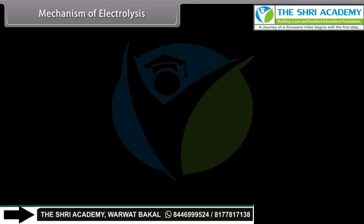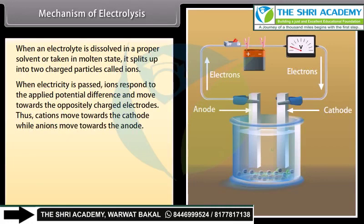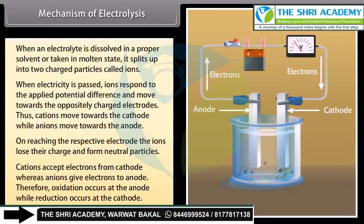When an electrolyte is dissolved in a proper solvent or taken in molten state, it splits up into two charged particles called ions. When electricity is passed, ions respond to the applied potential difference and move towards the oppositely charged electrodes. Thus cations move towards the cathode while anions move towards the anode. On reaching the respective electrode, the ions lose their charge and form neutral particles. Cations accept electrons from the cathode, whereas anions give electrons to the anode. Therefore, oxidation occurs at the anode while reduction occurs at the cathode.